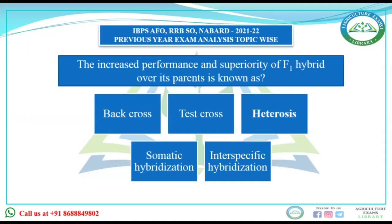Our next question is: the increased performance and superiority of an F1 hybrid over its parents is known as what? First option is back cross, second is test cross, third is heterosis, fourth is somatic hybridization, and fifth is inter-specific hybridization.